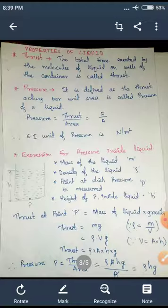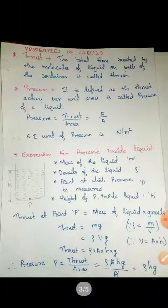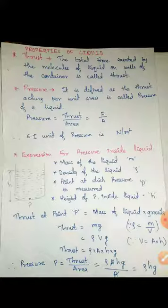We know that density ρ equals mass divided by volume, so mass M equals ρ into V. Substituting, thrust equals ρVG. Volume is area into height, so thrust becomes ρ × A × H × G. Now, pressure at point P is thrust divided by area — that is (ρ × A × H × G) divided by A. The area A cancels, and finally we get the equation for pressure: P = ρHg.